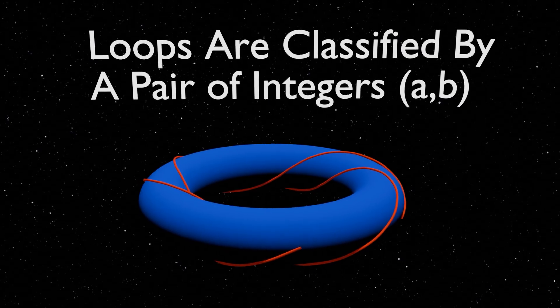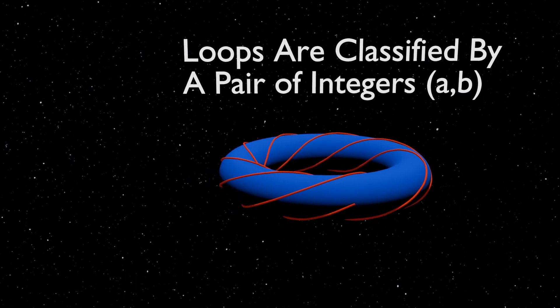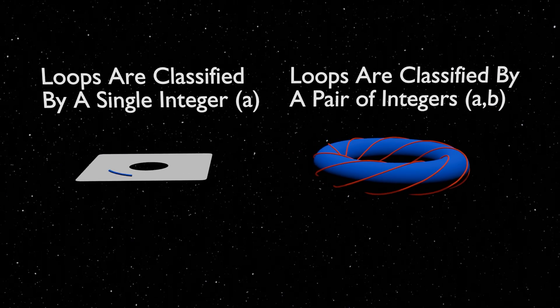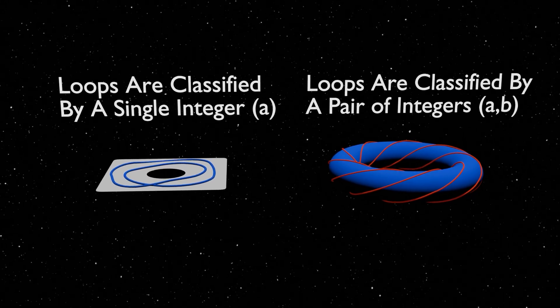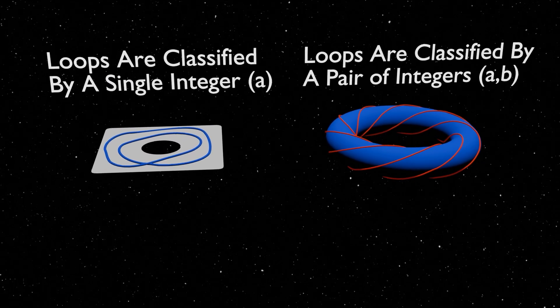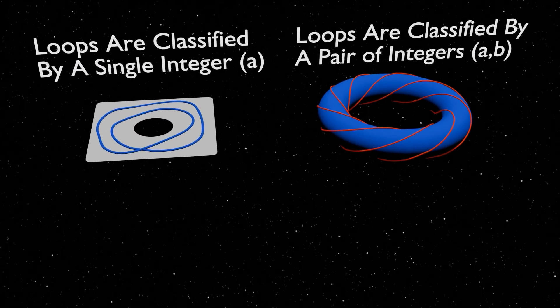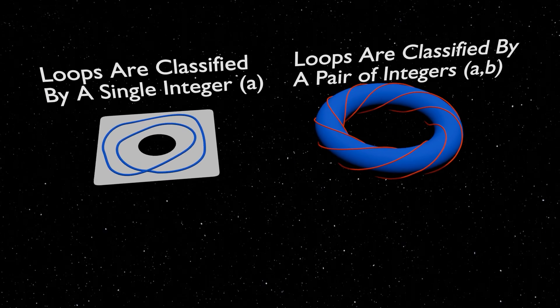This means that the algebraic structures of loops are different on both worlds. From this, you can deduce that you're not living on a flat world with a hole through the center. If you were, you would expect to find that algebraic structure rather than the donut's algebraic structure.